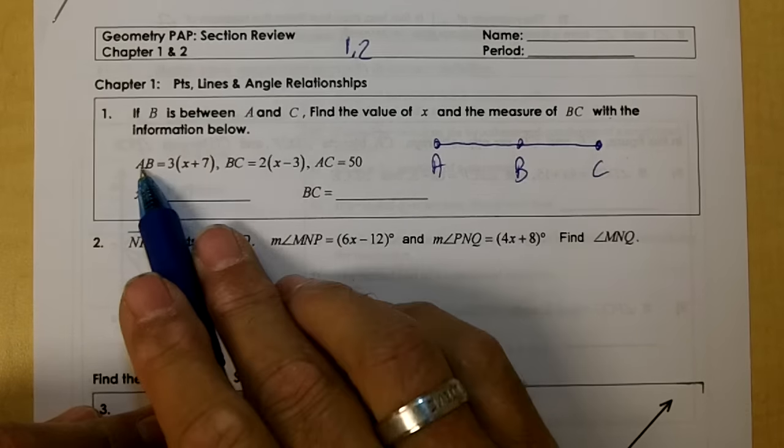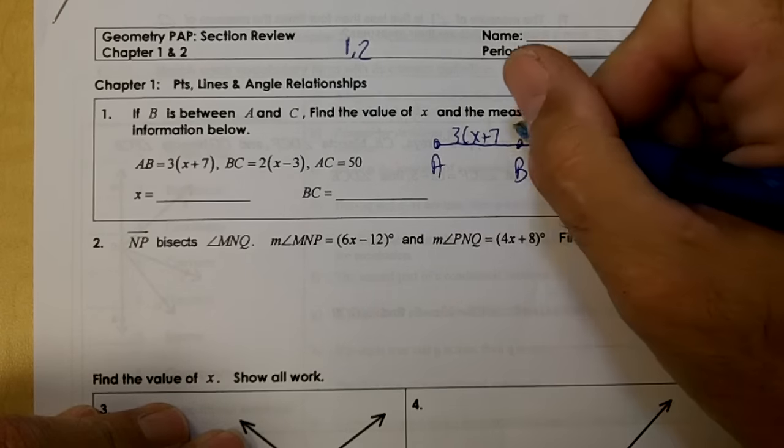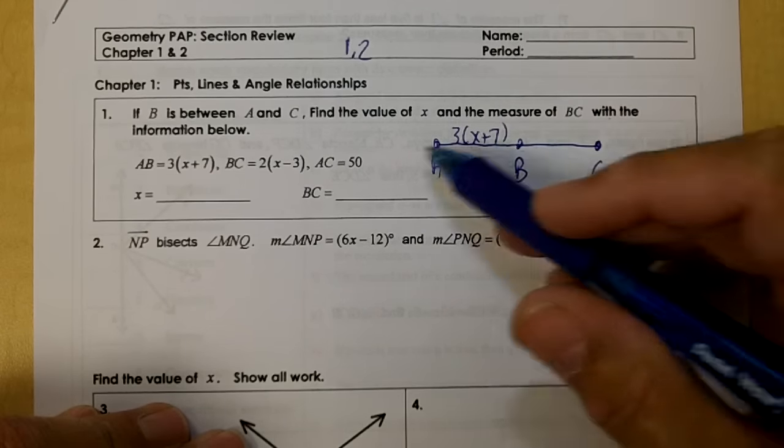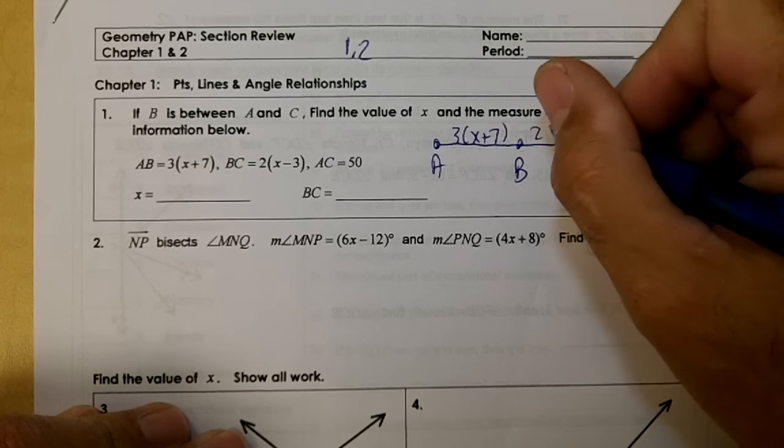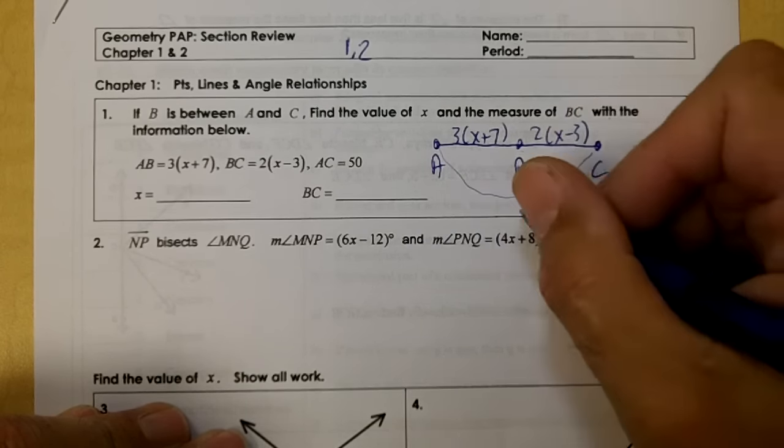Line segment AB is equal to 3(X+7). Line segment BC is equal to 2(X-3). And AC, the whole thing, is equal to 50.